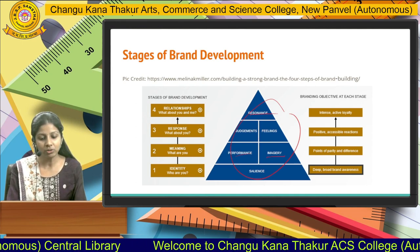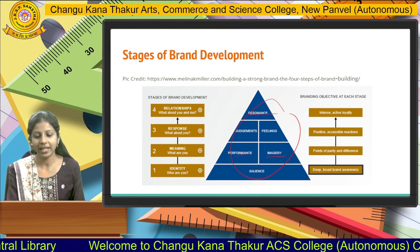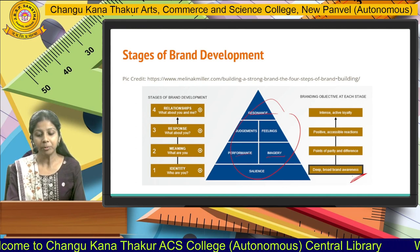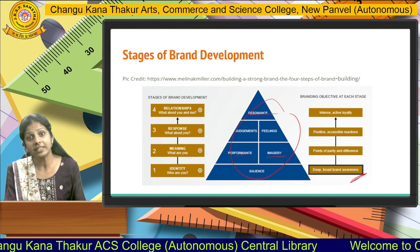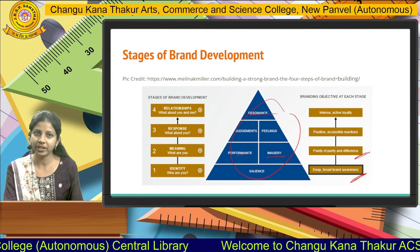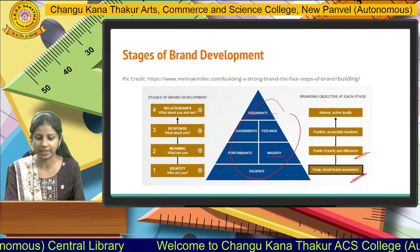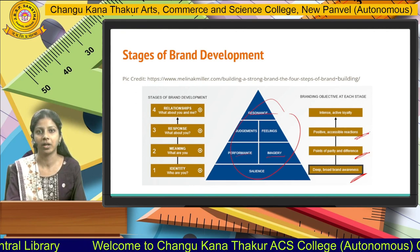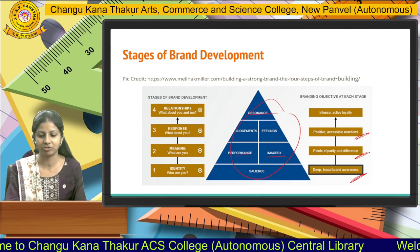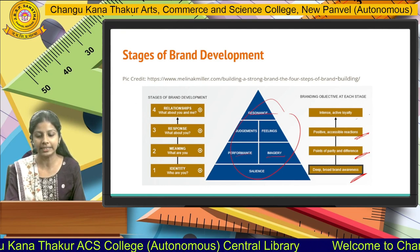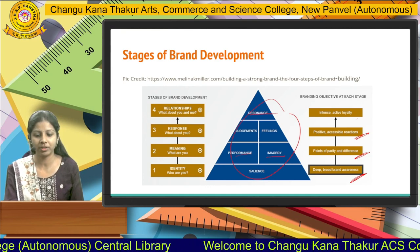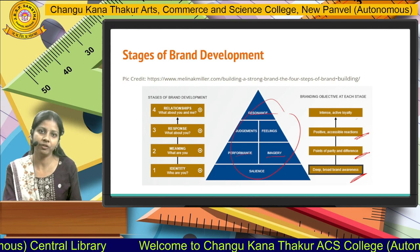Then we have branding objectives at each stage. First, deep and broad brand awareness — what all brand awareness is required. Then points of parity and differences — what similarities and differences exist in branding. Then positive and accessible relationship — what relationships have been formulated by the branding process. Then intense, active, and loyalty — what feelings are associated with the branding.